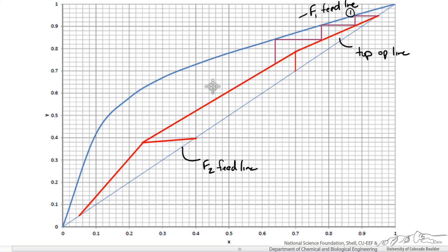Since I have shortened those lines it is a little easier to do this and I will just continue doing this until we get to our bottom composition. You can see that it did not quite end where we wanted to so we would probably add one last stage which in this case is our partial reboiler.